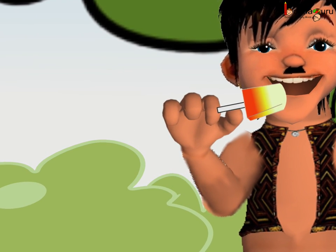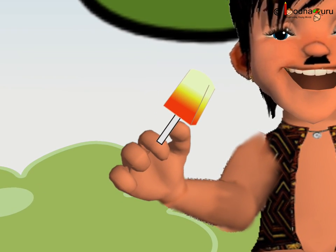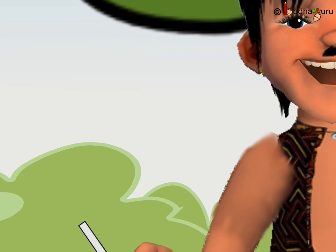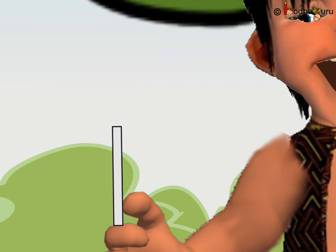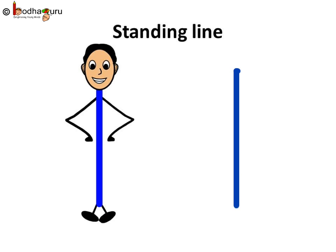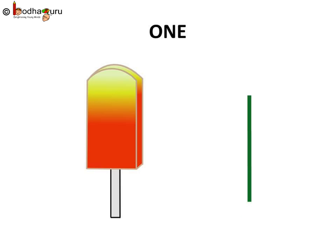Remember standing line? One is written as a standing line. One orange bar.